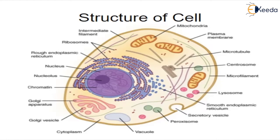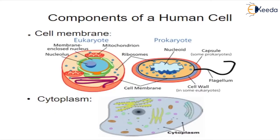Let us see in detail about cell structure. Cells are the basic building blocks of all living things. The human body is composed of trillions of cells. They provide structure for the body, take in nutrients from food, convert those nutrients into energy, and carry out specialized functions. Cells also contain the body's hereditary material and can make copies of themselves. Cells have many parts each with a different function. Some of these parts, called organelles, are specialized structures that perform certain tasks within the cell. A group of cells forms tissue, various tissues form an organ, and different organs make up the body.